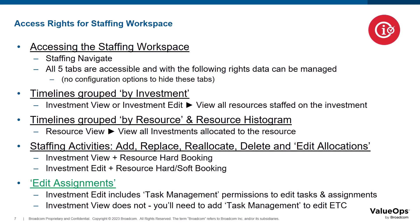When viewing allocations or assignments grouped by investment, the user will see all investments for which they have view or edit access, and when expanding the investment group, they see all resources staffed to that investment. When grouped by resource, the user sees all resources for which they have view or edit access. This also applies to the Resource Histogram on each of the four tabs. Having the appropriate combination of investment and resource booking permissions allows staffing activities. With the new edit assignments modal, the user can edit ETCs with task management permissions included in the investment edit or granted as a separate access right.